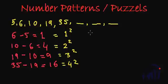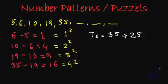So the sixth term will be 35 plus square of 5, that is 25, which is equal to 60.